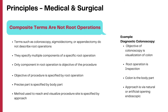Let's understand the principles of the medical and surgical section. Composite terms such as colonoscopy, appendectomy, or sigmoidoscopy are not used to build a code in PCS. Instead, these terms represent the different components involved in the actual procedure. For example, a diagnostic colonoscopy is coded to the root operation inspection if only visualization of the colon was performed. But if during the same colonoscopy session a polyp was removed from the transverse colon, the root operation would be excision and not inspection — it depends on what was actually done at the end of the procedure.